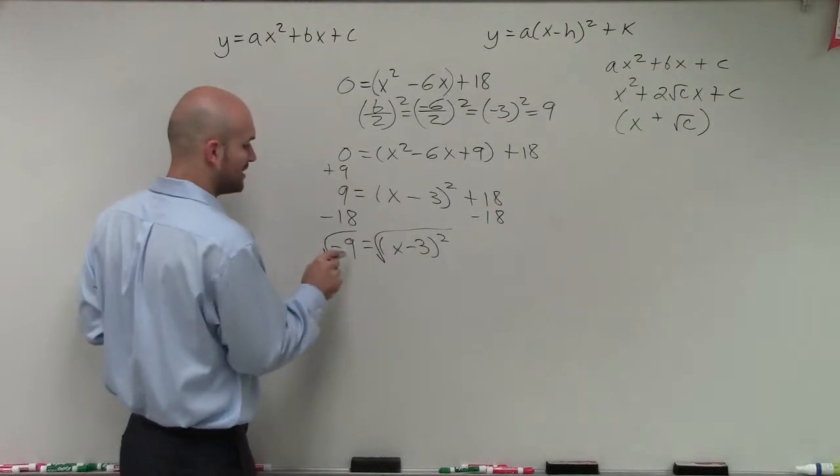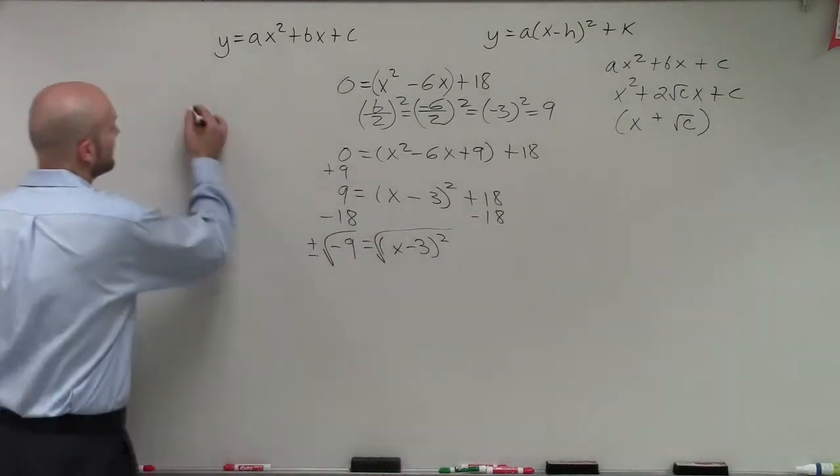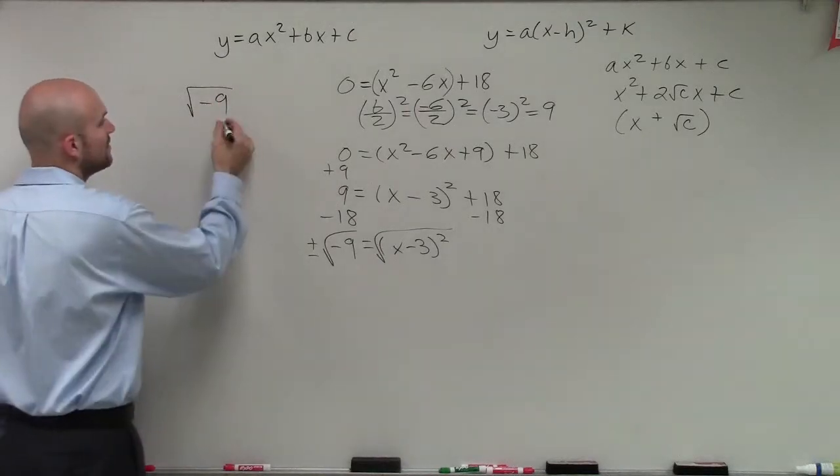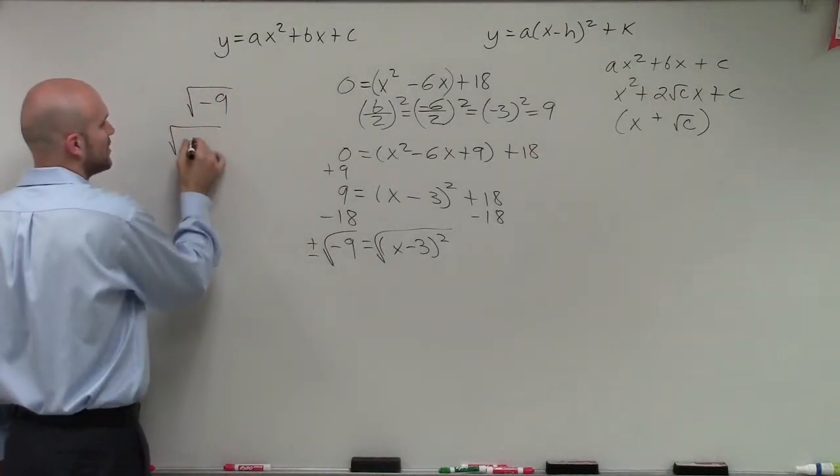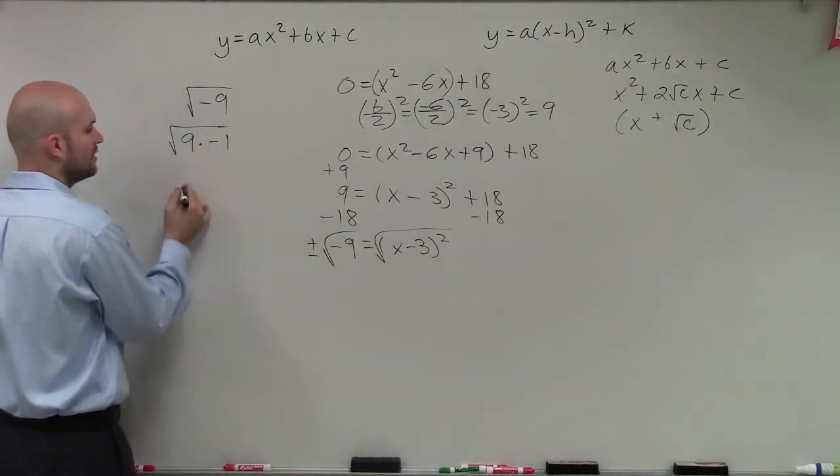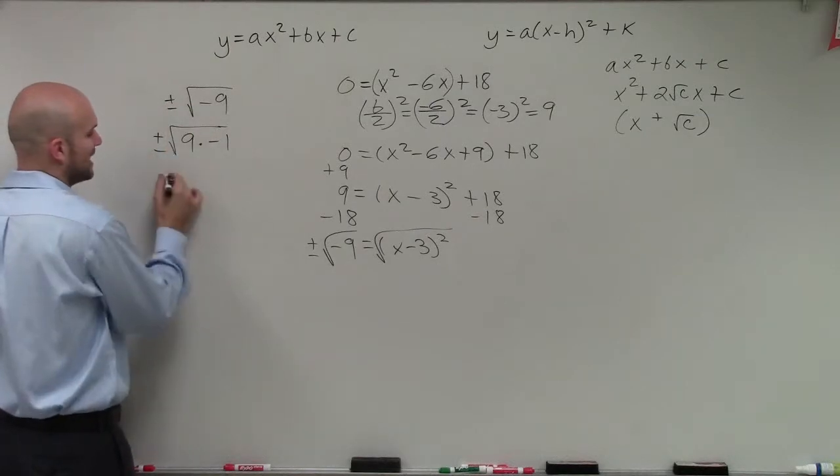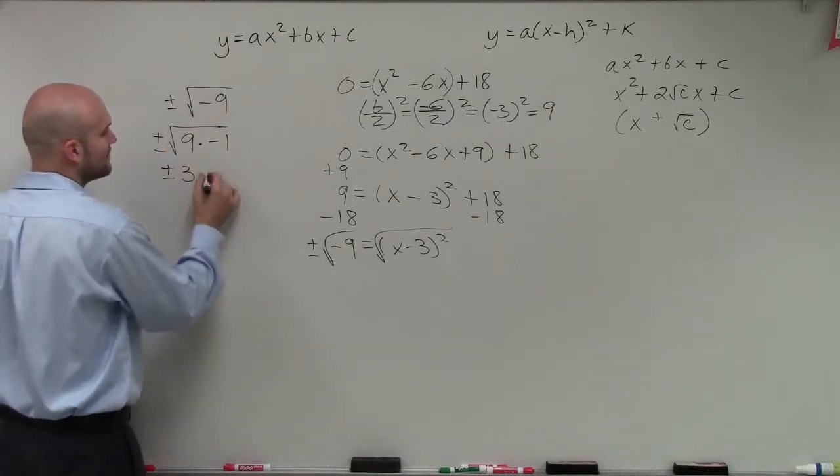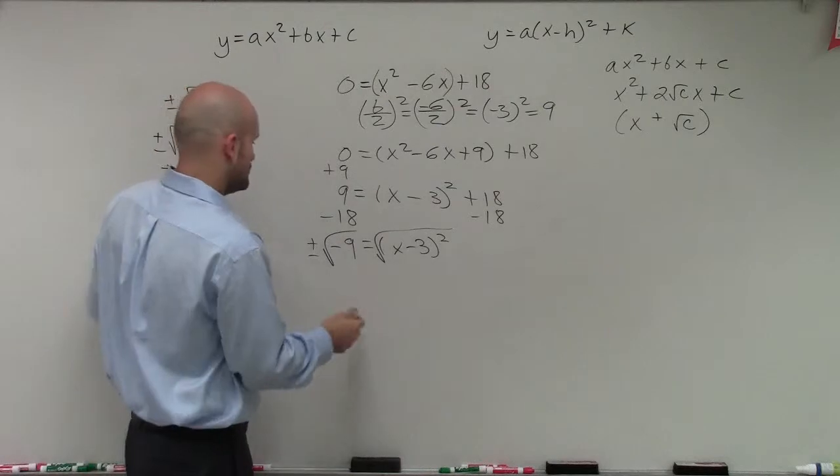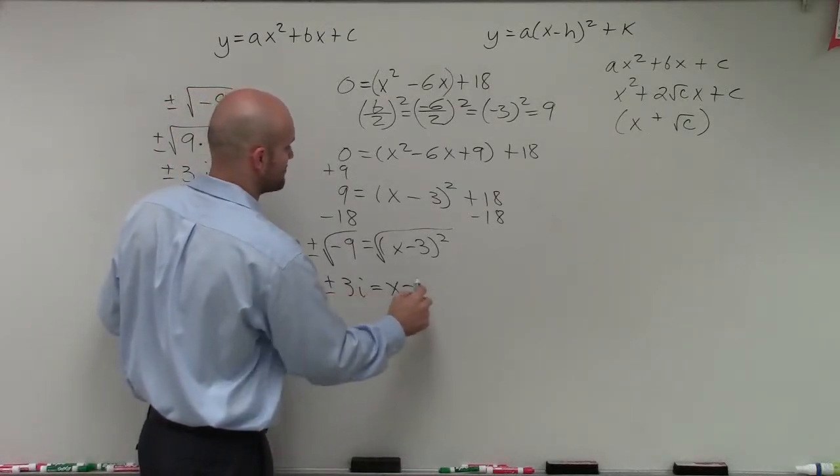So therefore, remember, whenever you take the square root, you have to introduce a positive and a negative. And then also, the square root, when we're taking the square root of a negative number, we can rewrite that as the square root of 9 times the negative 1. Well, the square root of negative 1 we write as i. And the square root of 9 is going to be plus or minus 3. So therefore, I have plus or minus 3i equals x minus 3.